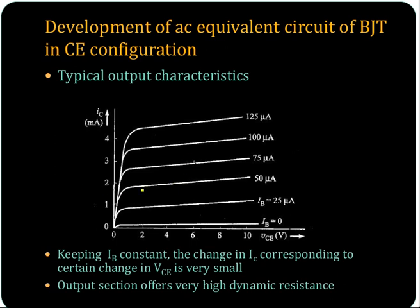You are all familiar with this curve. You can see that the variation in IC for a change in VCE is very small — keeping IB constant for a particular base current. This is the base current.